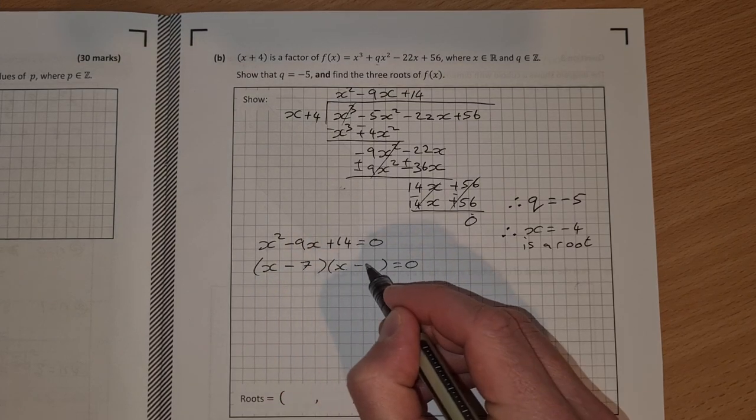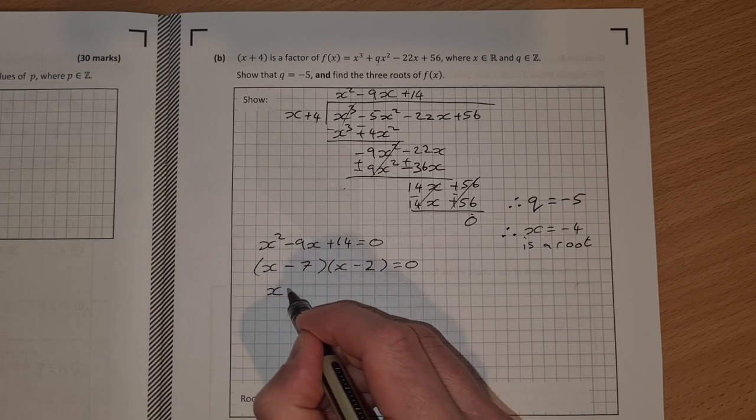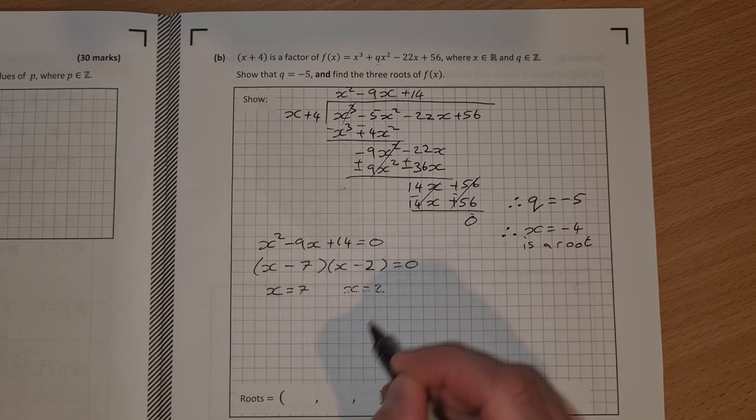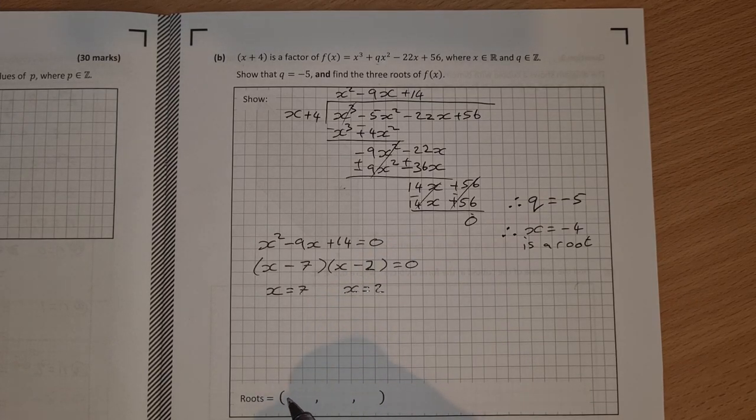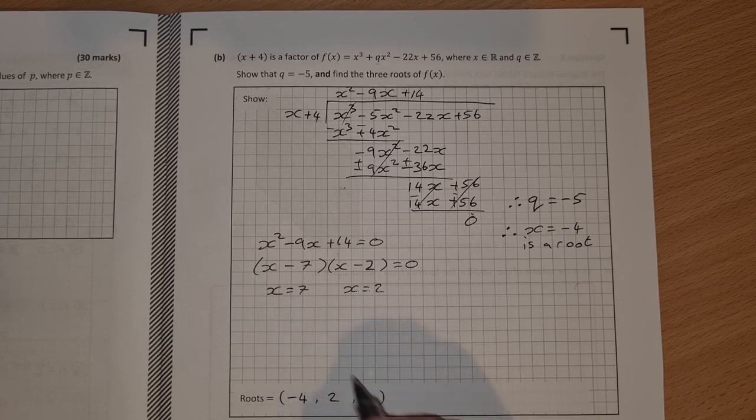Minus 7 by minus 2. Multiply them together, you get 14. Add them together, you get minus 9. So x is equal to 7. X is equal to 2. So my three roots are minus 4, 2, and 7.